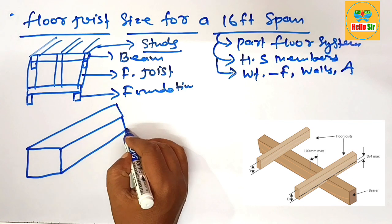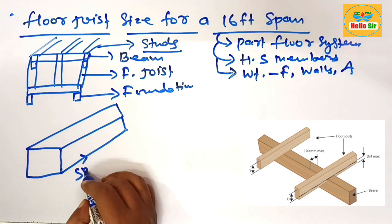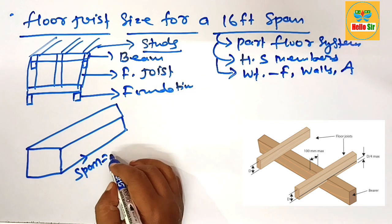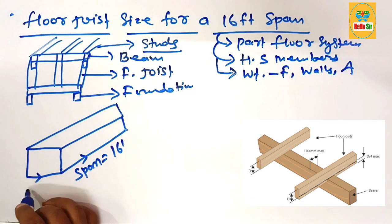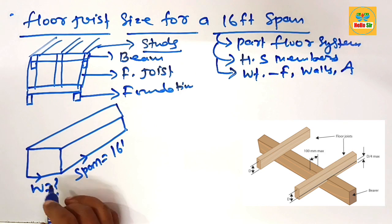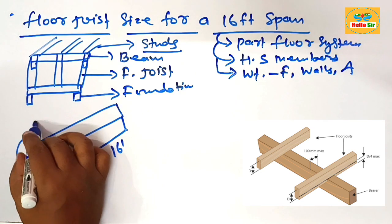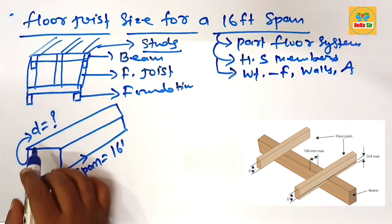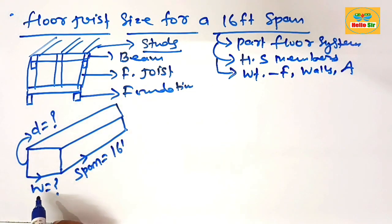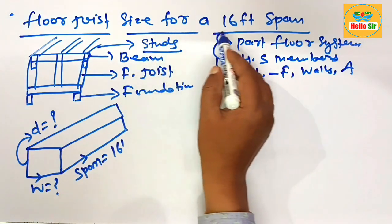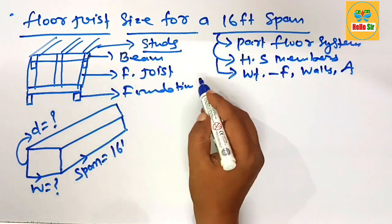This is the span length of floor joist, which is given as about 16 feet. This is the width section you have to calculate, and this is the depth section. It means you have to find out what will be the depth and width of floor joists needed for a 16-foot span.